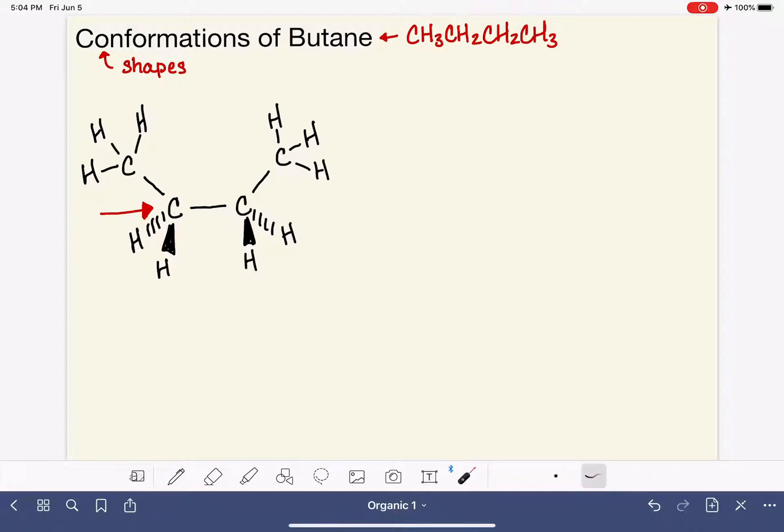So first of all, the front carbon is this guy right here, including the stuff that's attached to it. So here is our front carbon. And if we look at this front carbon, we see that we have sticking straight up and you should be able to see this in the model that you have built, we have a carbon sticking straight up with three hydrogens on it. And then we have, again, we're focusing on this. This is our front carbon and the things attached to it. This has two hydrogens on it, one pointing down to the left and one pointing down to the right. And so that's our front carbon.